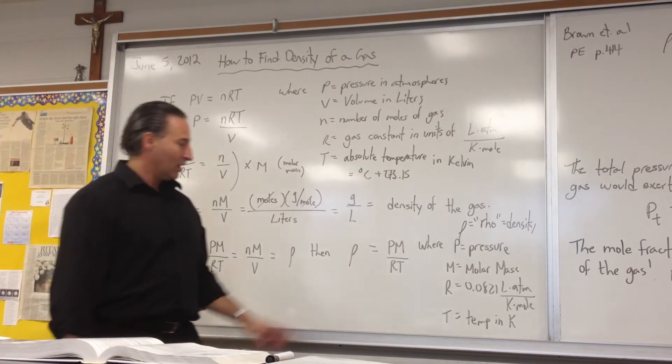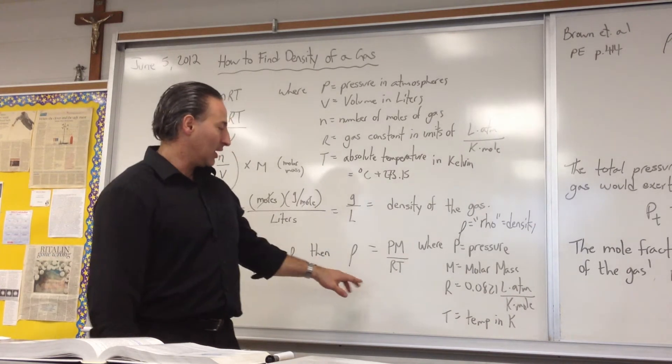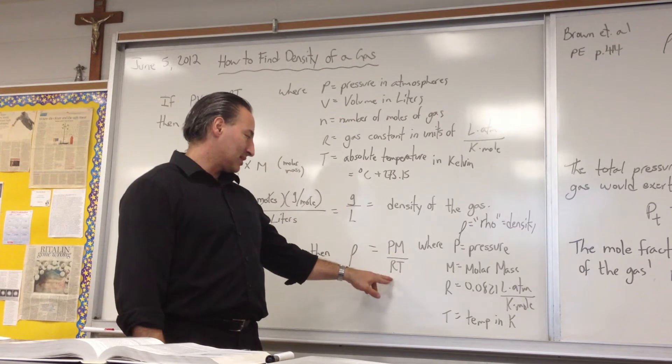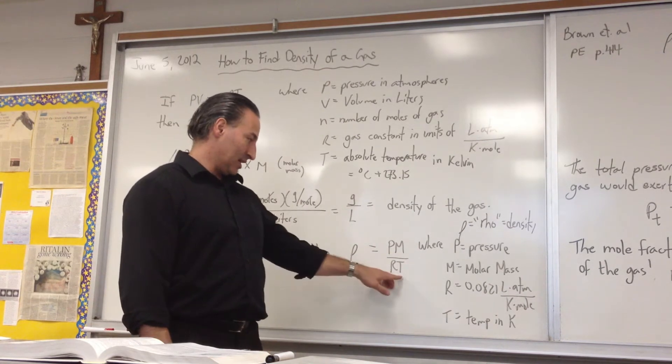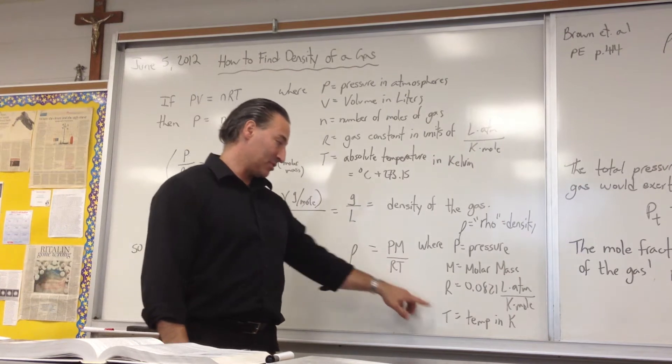So the density of the gas is given by pressure times the molar mass of the gas divided by the gas constant divided by the absolute temperature, that is the temperature in Kelvin.